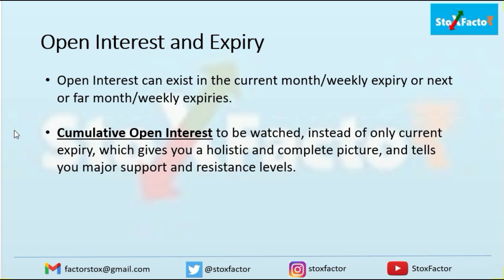Open interest can exist in the current month, weekly expiry, or far month expiries. For stocks, there are only monthly expiries and most liquidity is in the current monthly expiry. In India, liquidity is very high in the current month for stocks, lower in the next month, and very low two months out. For indexes, more than 60% of total market volume is in the index — Nifty, Bank Nifty, Nifty Financial Services — with the rest divided among 130 stocks.